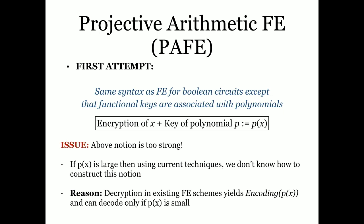There is nothing wrong in defining this notion — it's not impossible, we just don't know how to construct it. If you consider FE for specific degree polynomials, for instance degree-three polynomials, it's an open question whether that would imply IO. So let me define the actual notion we use.